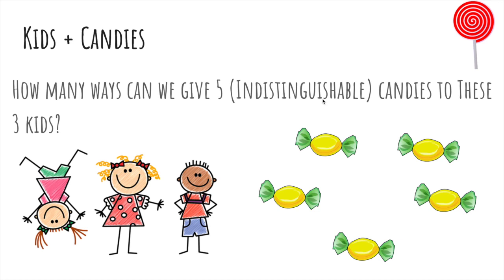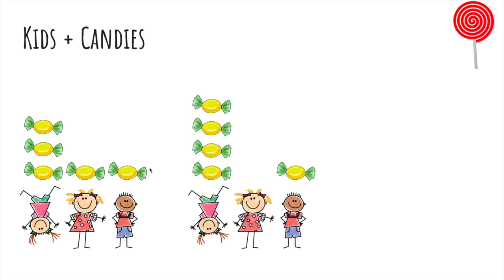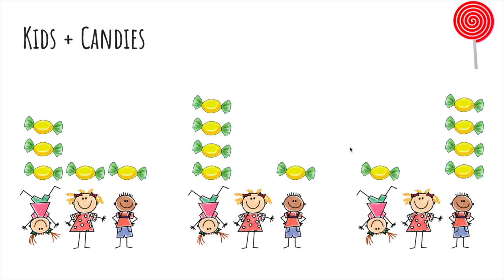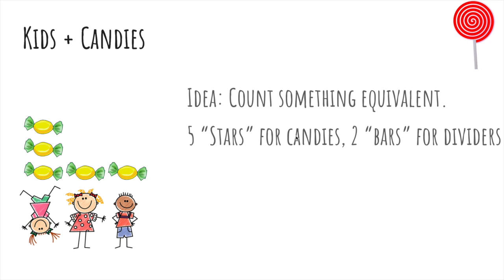Now we'll talk about how many ways we can give five indistinguishable candies to these three kids here. So here's one candy distribution, here's another, and here's yet another, and these two are different because the person getting four candies is a different person. So let's count something equivalent actually. Let's say there's five stars for the candies, the five candies, and two bars for the dividers.